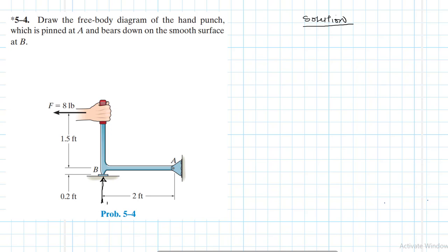Let's call it B. We have a pin at A, so we expect two reaction forces, Ay and Ax like so. So this is a free body diagram.